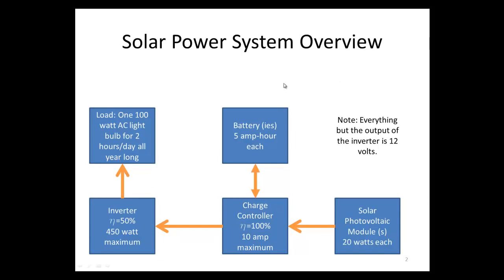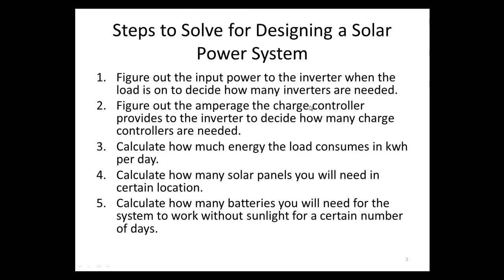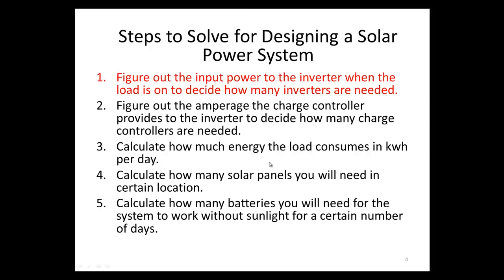So that's the overview of the system. To choose how many components we need, we go through five steps: Step 1 — how many inverters are needed; Step 2 — how many charge controllers are needed; Step 3 — calculate how much the load uses per day; Steps 4 and 5 — calculate how many solar panels and batteries we'll need. We're going to go through this step by step.